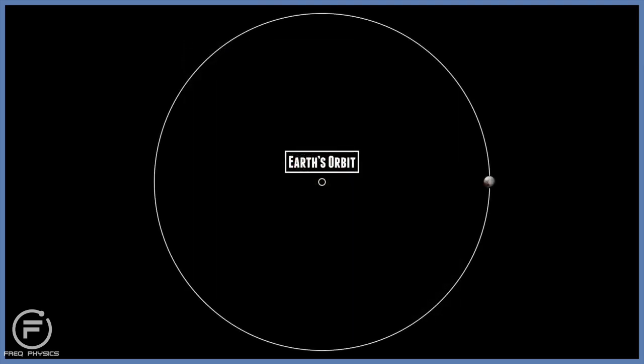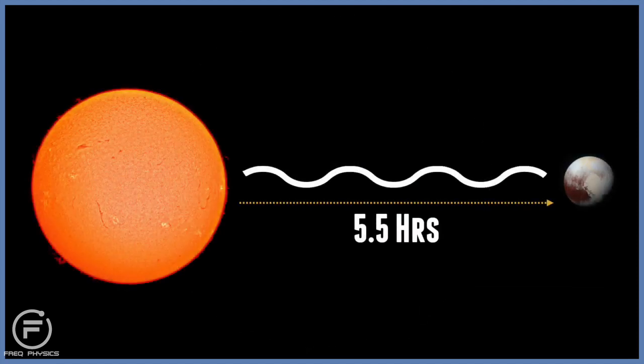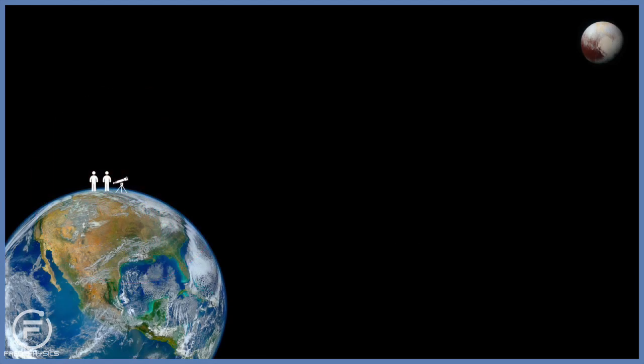Pluto orbits 40 times farther out from the Sun than the Earth does. This means that it takes 5.5 hours for the light to reach Pluto, and roughly the same amount of time to reach Earth. This means that once the light reaches the Earth from Pluto, it is very dim. This means that you require a very good telescope to spot this very dim object. But we still love you Pluto.